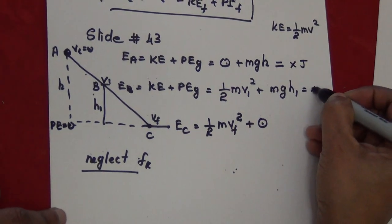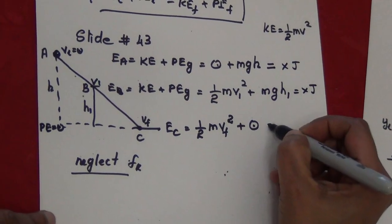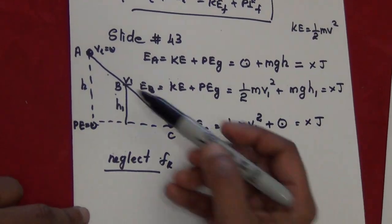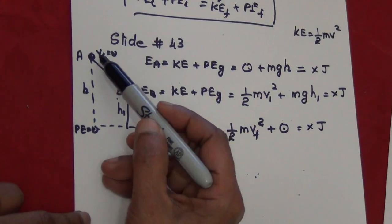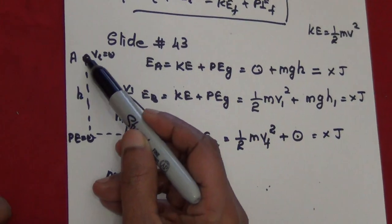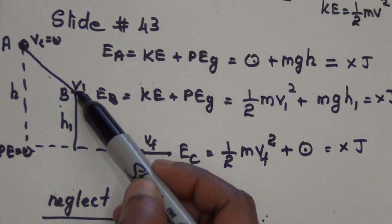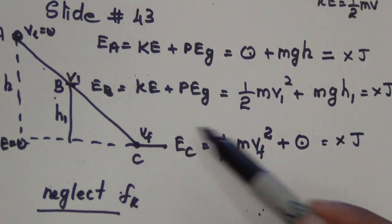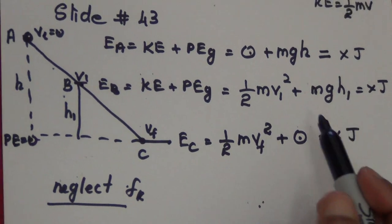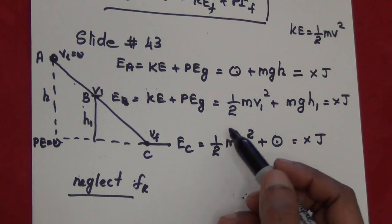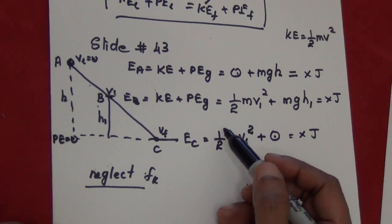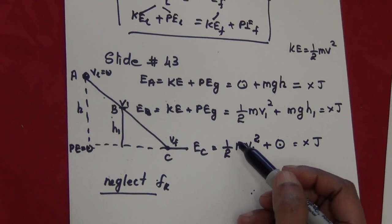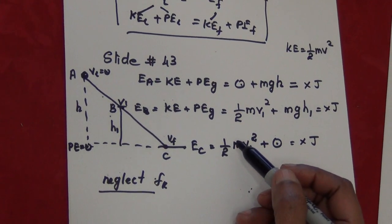Conservation of energy tells us that the total mechanical energy at A equals the total mechanical energy at B, which equals the total mechanical energy at C, or at any point along the path. If you add the total mechanical energy at any position, it should be the same. Note: this only applies if the system has only conservative forces.